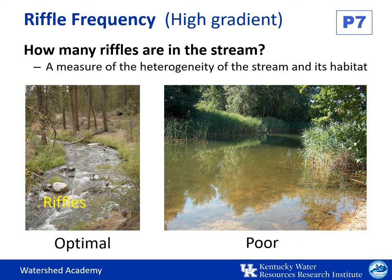For high gradient streams only, we assess riffle frequency. Mountainous or hilly terrain creates streams with more frequent riffles. For this parameter, you'll calculate the distance between riffles divided by the stream width to help determine your condition category rating. In addition to the variety of habitat indicated by riffle frequency, the presence of riffles also signals the availability of well-oxygenated water that is ideal for aquatic life.